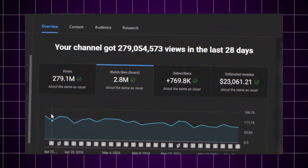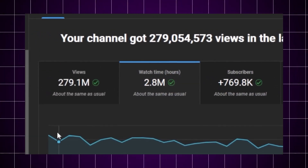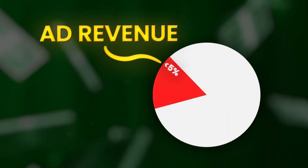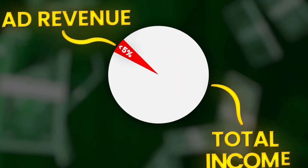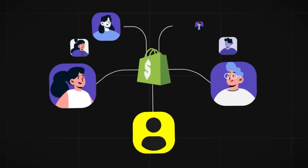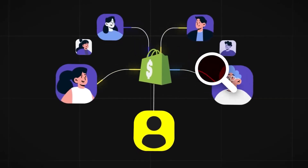Here's the truth: you don't need 1,000 subscribers or 4,000 watch hours to start making money. Ad revenue is a tiny piece of what's possible — last month, my ad revenue was under 5% of my total income. The real money is in digital products. Solve a real problem for your viewers and offer a product that adds value. I talk about this more in the official ZebraCat community on Skool, which you can join right now.